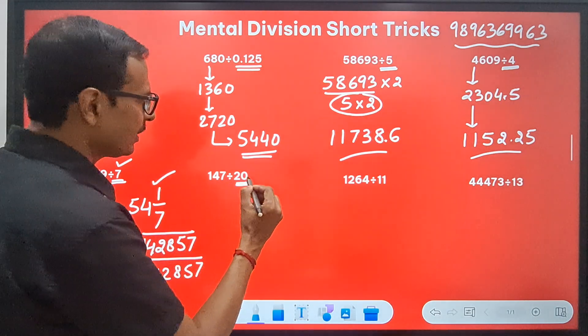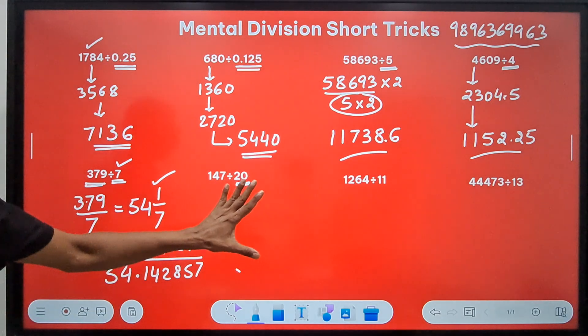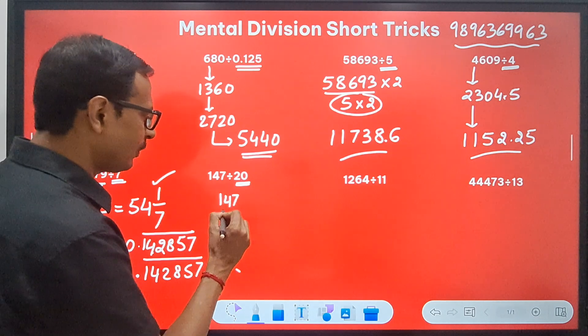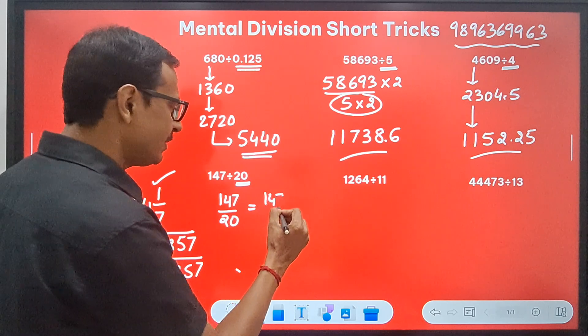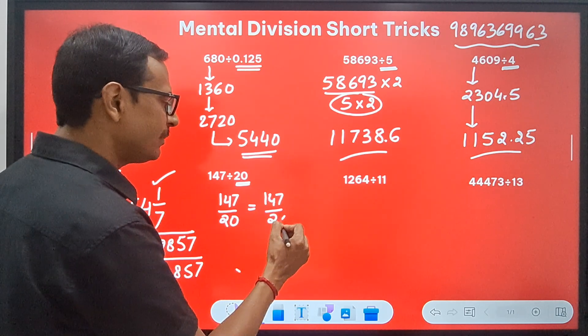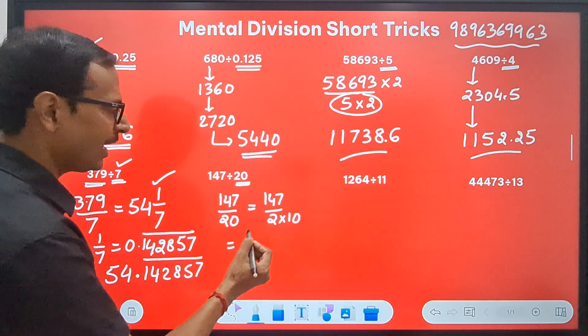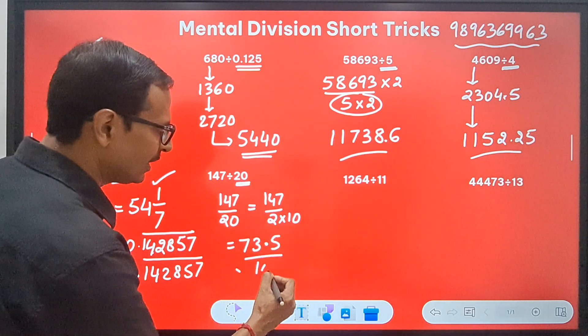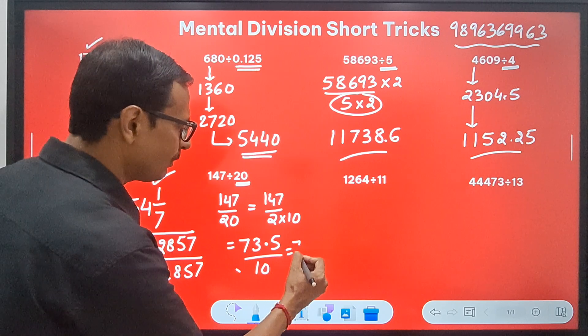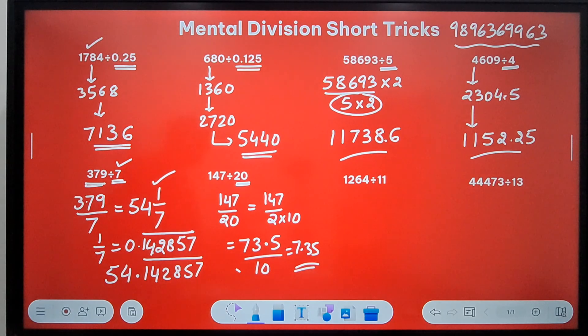When the divisor changes to a bigger number like 20, whenever you have zeros in the divisor it becomes easier. 147 upon 20 is actually 147 divided by 2, then divided by 10. Division by 10 is not a problem—only halving is. Take the half of 147, which is 73.5, and when you divide by 10, you get 7.35. Keep checking all these calculations using the calculator.